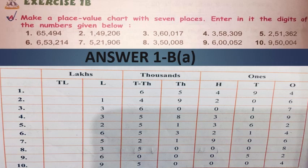Exercise 1b: Make a place value chart with seven places and enter the digits of the numbers given below. Question 1: 65,494. Four goes at the ones place, nine at the tens place, four at the hundreds place, five at the thousands place, and six at the ten thousands place. The answer is 65,494.